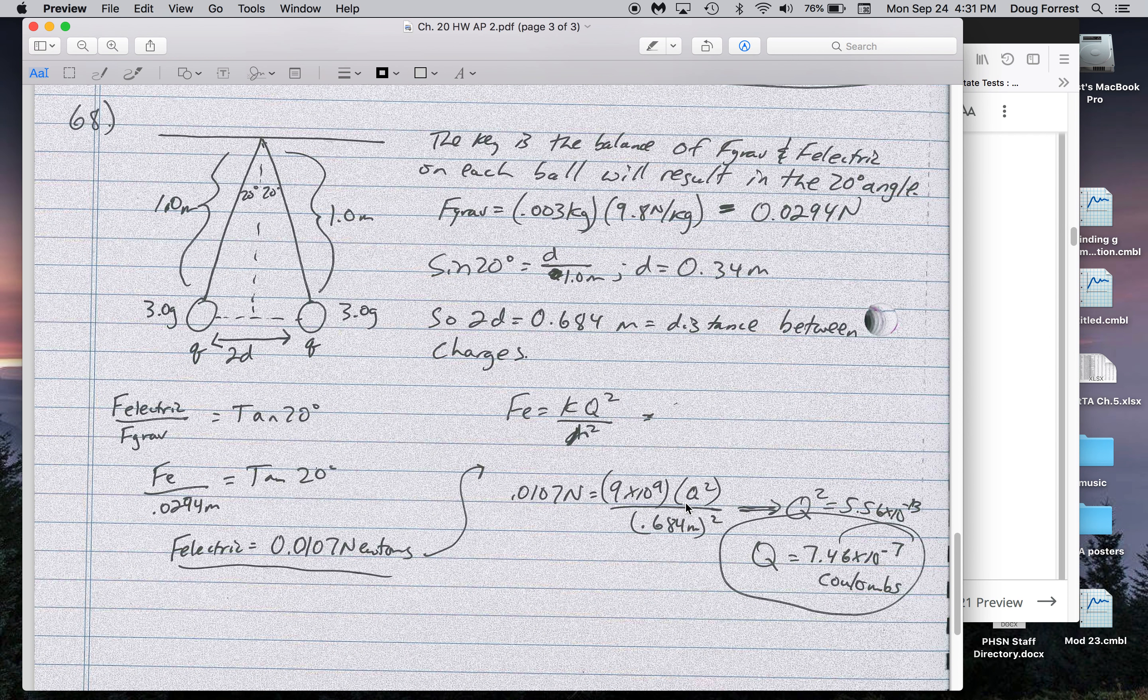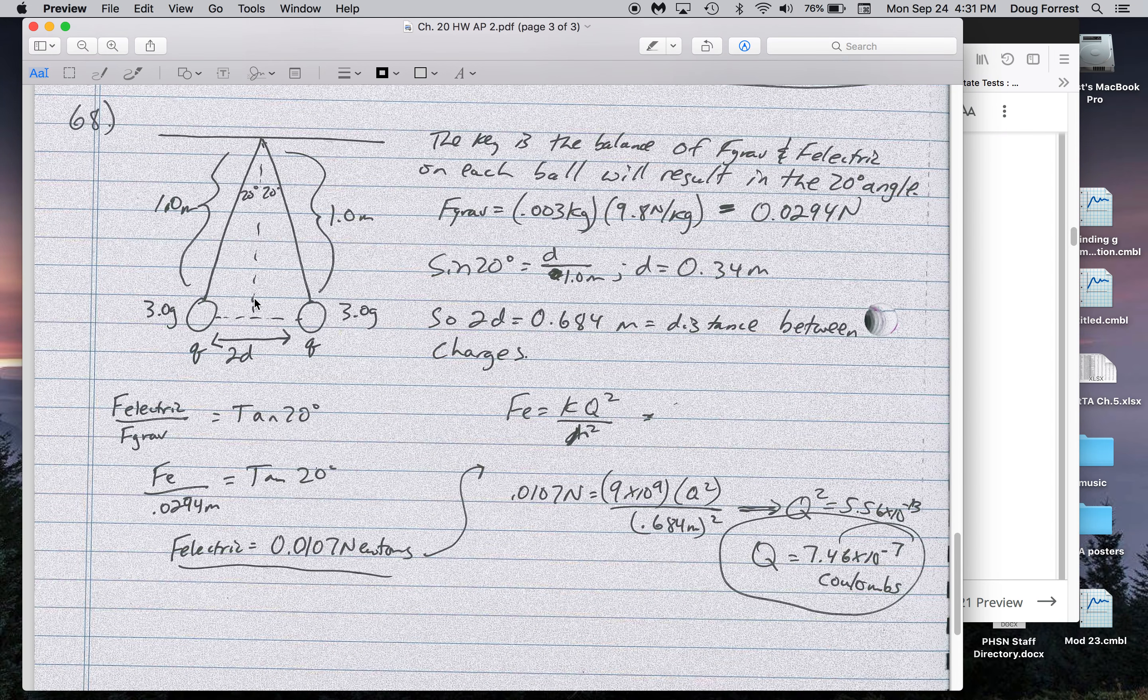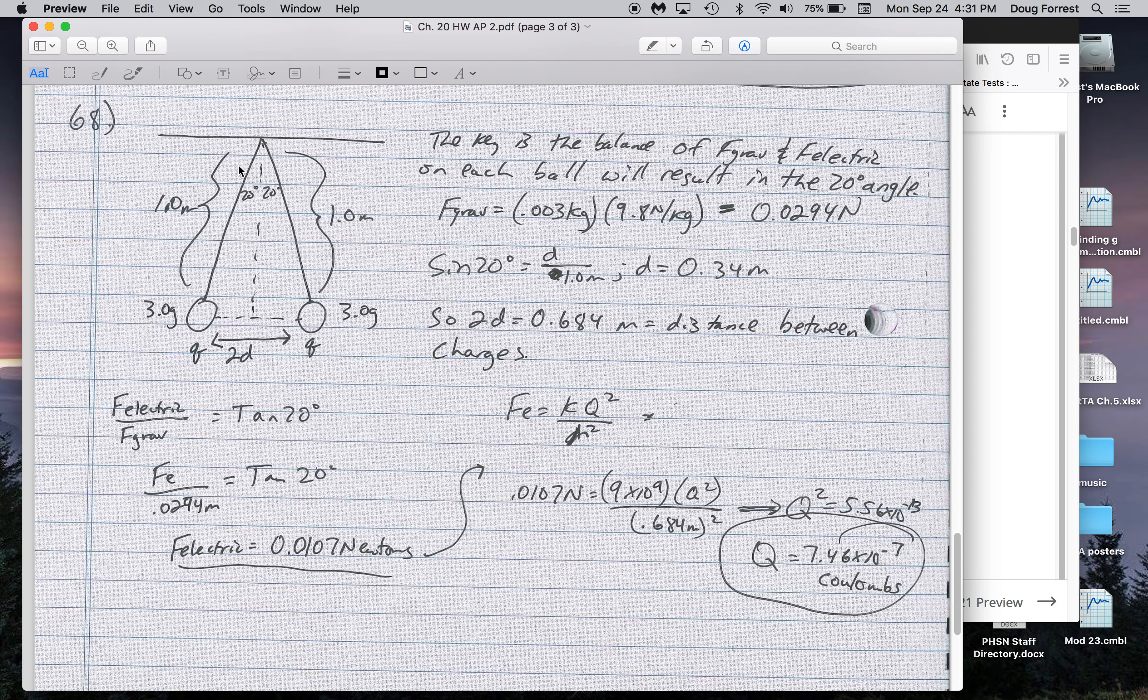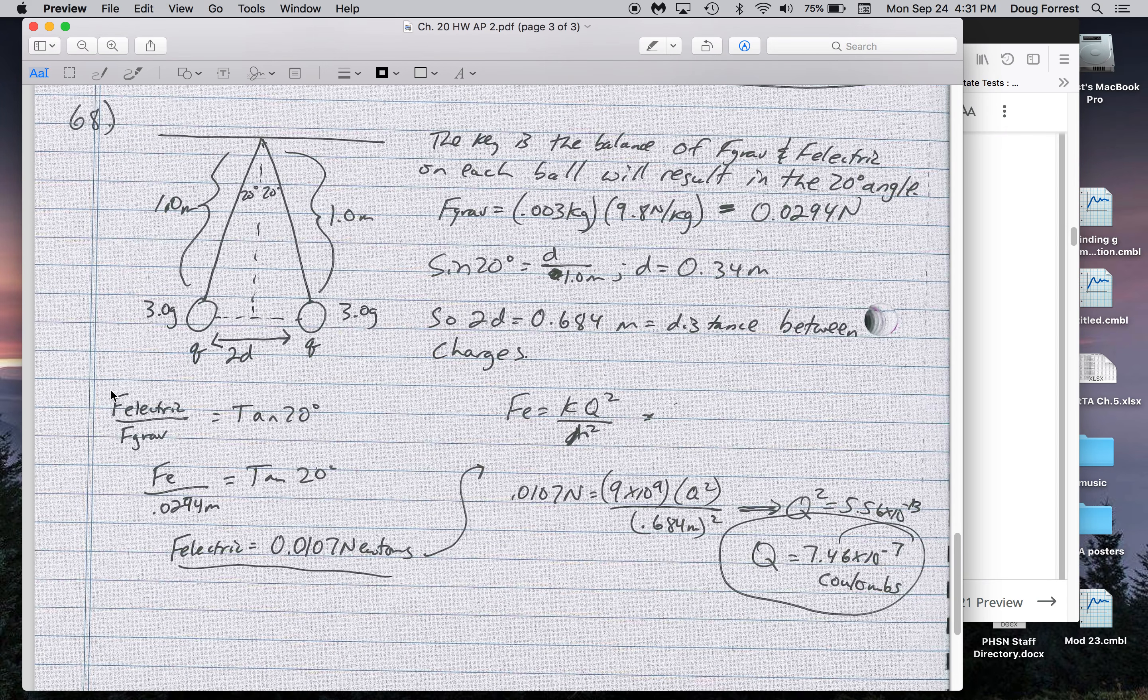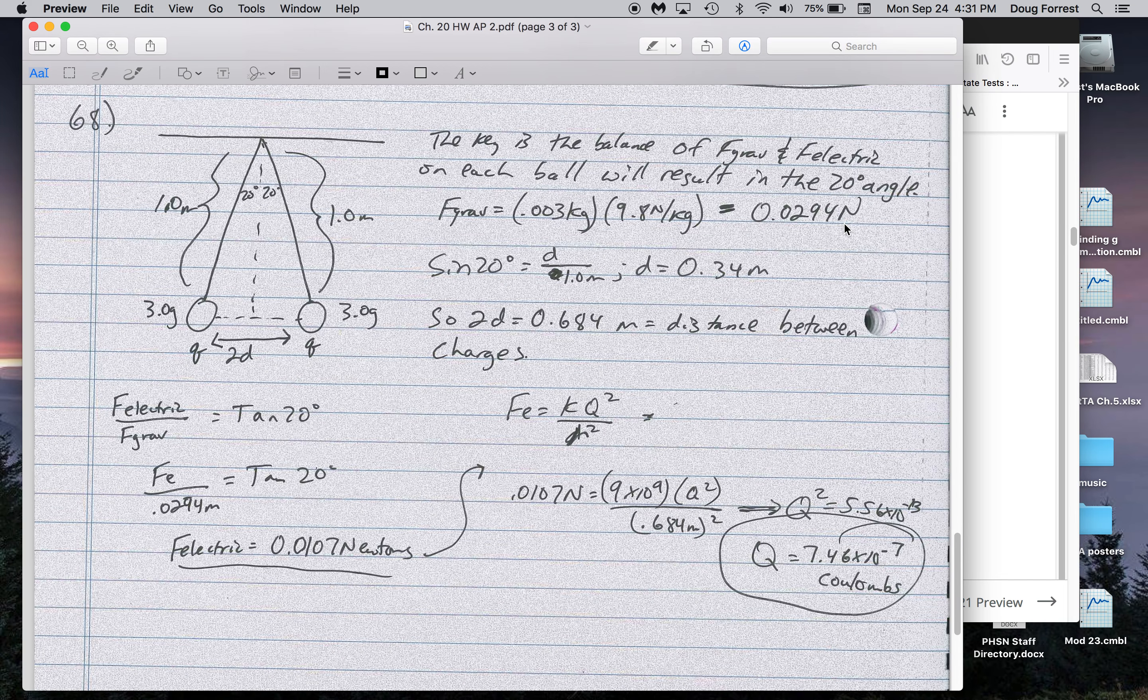Number 68 we did in class. I want to thank Noah Kenyon for helping out with that. So essentially here we need to think about that the gravitational force on these objects is vertical. The horizontal force is electrical, and that would be repulsive. So the ratio of those, electric to gravitational, is horizontal to vertical. And since we knew the angle from vertical was 20 degrees, we'll plug that into a trig equation. Gravitational force is up here, using M times G.